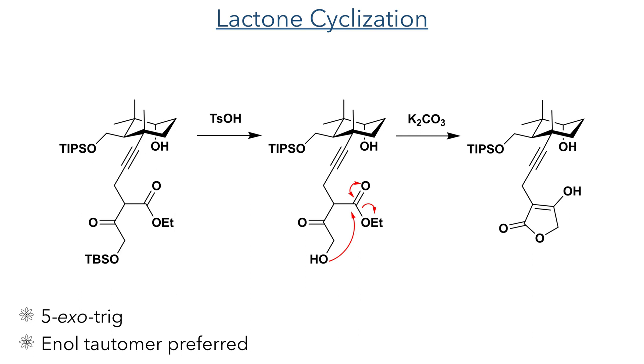However, the enol tautomer was preferred to the ketone form, likely due to the delocalisation of the electrons in the alkene with the ester group.